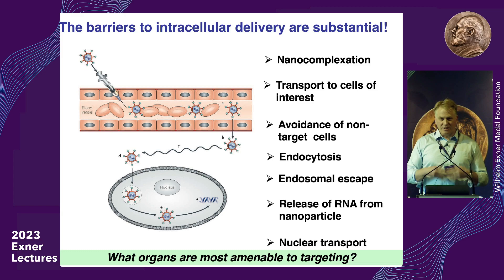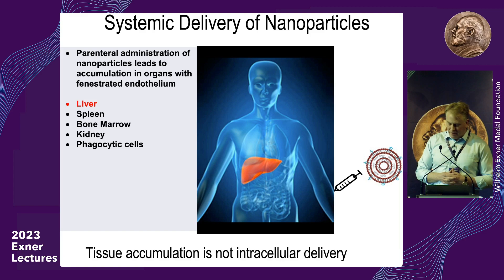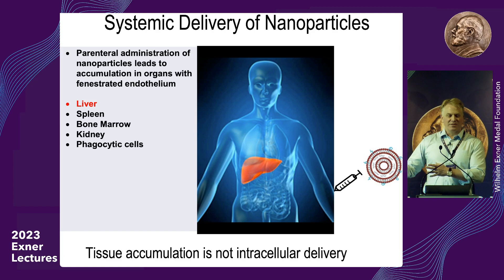It sounds like science fiction, but there's been progress. The areas where we first saw progress are in organs that naturally filter the blood — like the liver, kidneys, spleen, and sometimes bone marrow. Depending on the properties of the nanoparticle, you often see accumulation in these organs after injection into the blood. However, having a nanoparticle get in the vicinity of cells is only the first step — we actually need to release the payload inside of cells, and that's been the fundamental challenge.